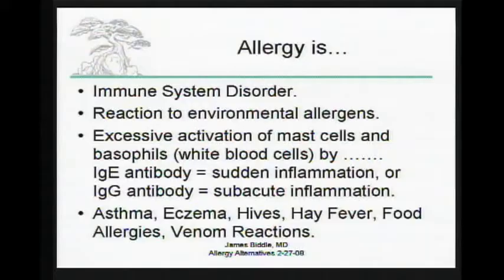These are things in your environment, and they work by activating your mast cells and basophils, which are white blood cells, which then release histamine. There's an IgE antibody which causes a sudden inflammation, and an IgG antibody which causes a more subacute or chronic inflammation in your body. Allergy shows up clinically as hay fever, asthma, eczema, hives, food allergies, and venom reactions if you're allergic to bees or wasps.